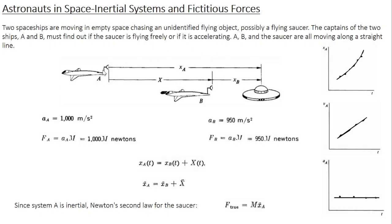Let's first take spaceship A. How does the captain find out whether this object is moving or not? First, he is going to define the position vector of this object with respect to a frame of reference. He is going to choose a frame of reference which is fixed on the spaceship itself. Let's call the position as X_A. Let's take only the one-dimensional scenario here.